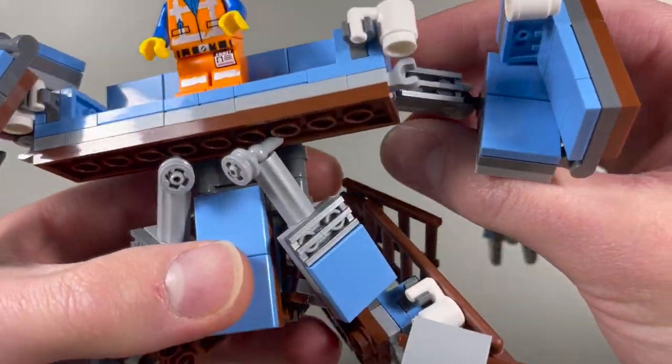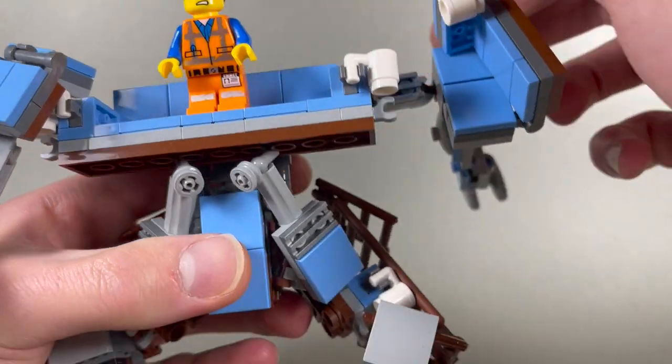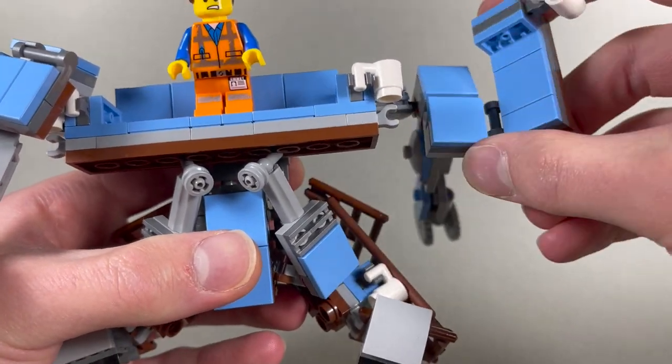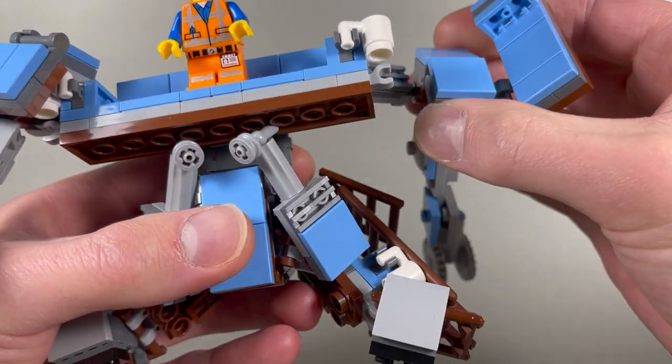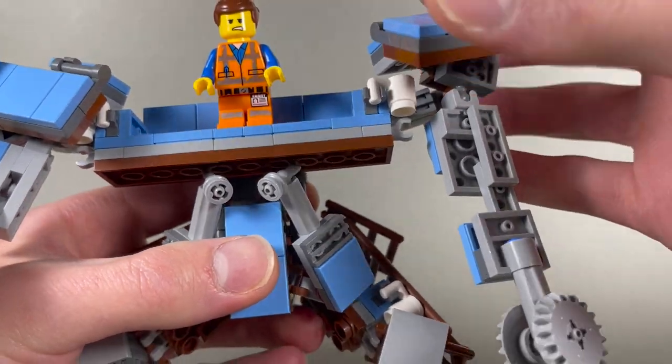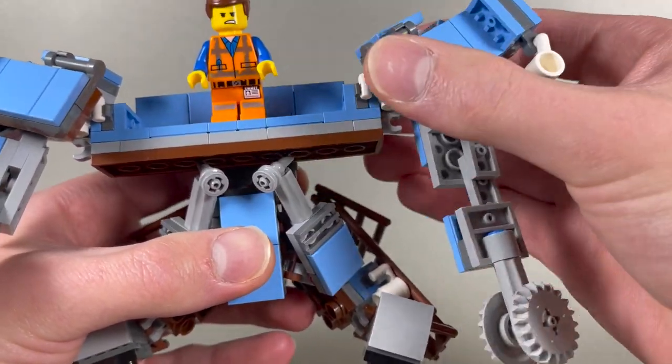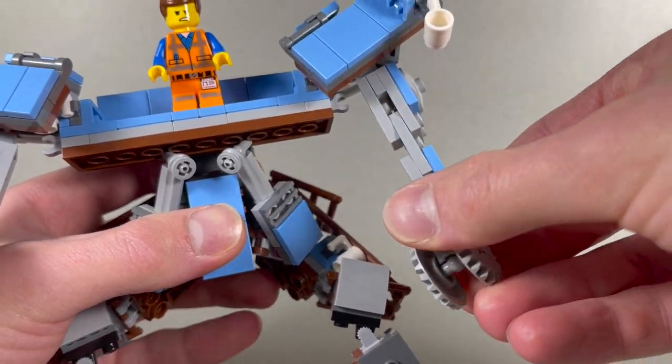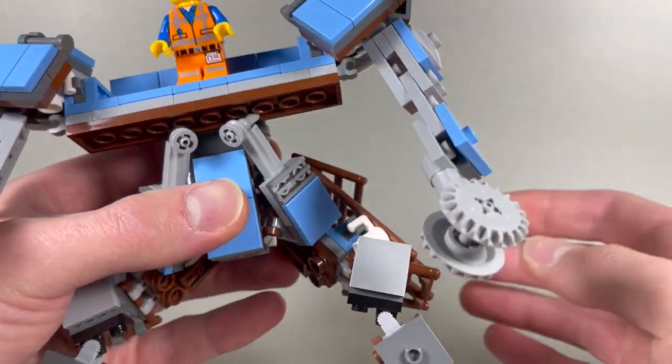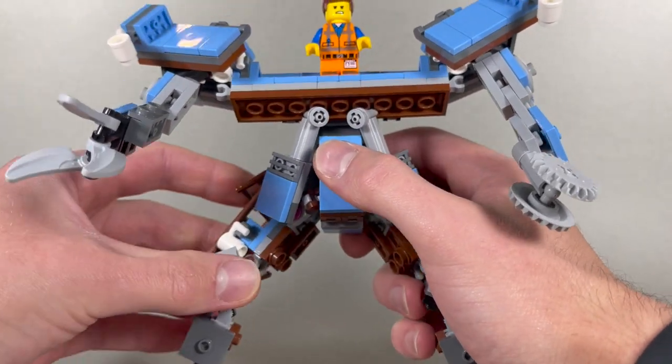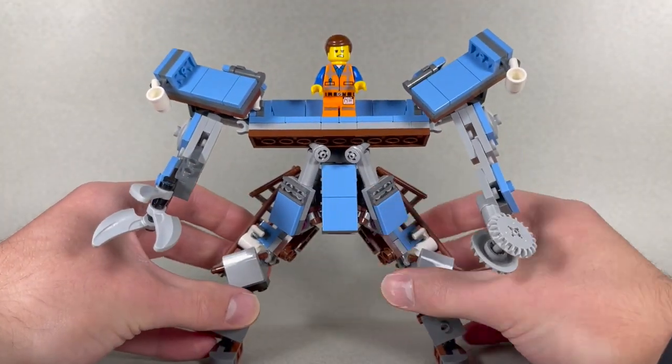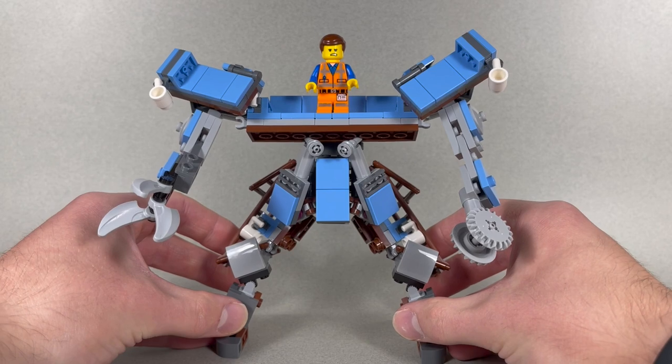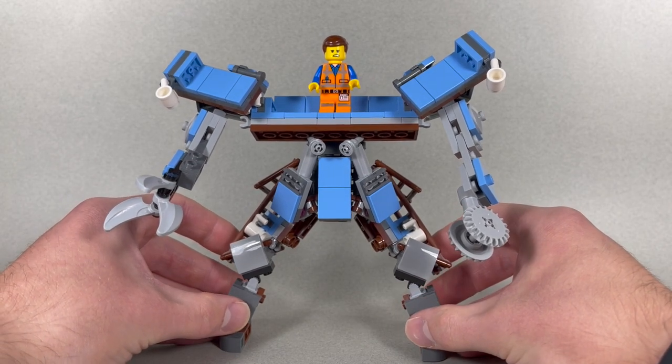So we'll do similar to the other side. We can make sure that's all the way up. Rotate this out, hinge that down and then bring that over the coffee mug. And on this arm, all you need to do is rotate it around and get it in a position that you like. So there, we have Emmett's triple-decker couch mech fully transformed and in its mech mode.